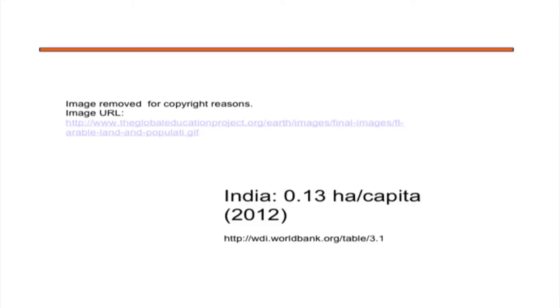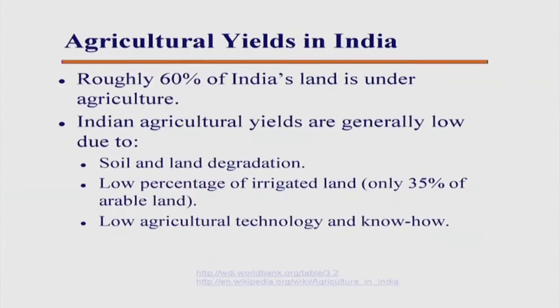The rise in population expected in the next couple of decades will put tremendous pressure on available arable land. Looking at world arable land over the past half century, it has been steadily decreasing, and as population increases that trend will continue. Asia has very little arable land per capita compared to other parts of the world. In India, roughly 60 percent of land is under agriculture, yet India does not boast very high productivities by world standards.